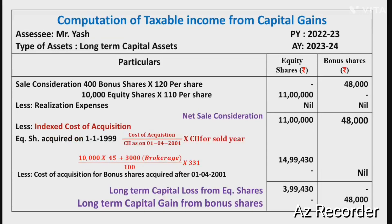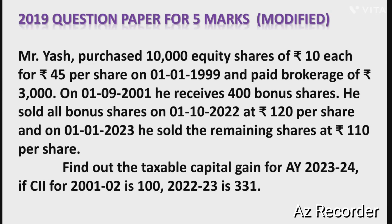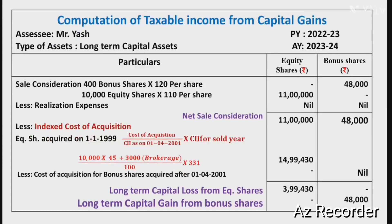We will now go for the solution. We have to prepare a table: Computation of Taxable Income from Capital Gains. Assessee: Mr. Riesh. Previous year: 2022-23. Assessment year: 2023-24. The nature of assets — both equity shares acquired on 1st January 1999 and bonus shares acquired on 1st September 2001 — the holding period is very long. Therefore, both are treated as long-term capital assets. We will use three columns: particulars, equity shares, and bonus shares.